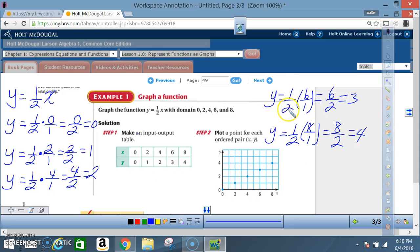Next, y is equal to 1 half times 6. Don't forget, there's a 1 up under there. So 1 times 6 is 6. 2 times 1 is 2. 6 divided by 2 is 3. y is equal to 1 half times 8 over 1. 1 times 8 is 8. 2 times 1 is 2. 8 divided by 2 is 4.